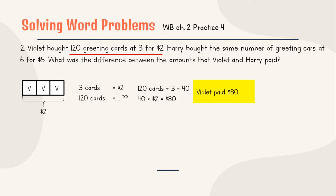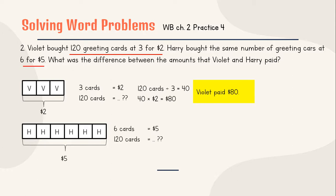How about Harry? We will use the same concept for Harry but different numbers. So Harry bought the same number of greeting cards, means that Harry bought 120 greeting cards. But Harry has 1 packet equals 6 for $5. So 1, 2, 3, 4, 5, 6. So 6 cards for $5. So 6 card equals 5. 120 cards will be 20. And now 20 packets of this, 20 packets of this, will be paid as $100. So Harry paid $100. Is that the answer? No. Is that a question? Nope.